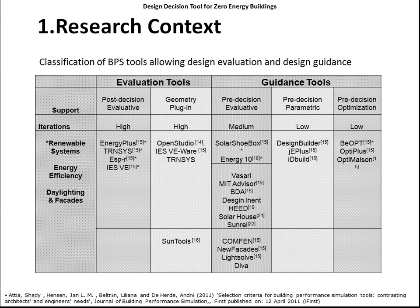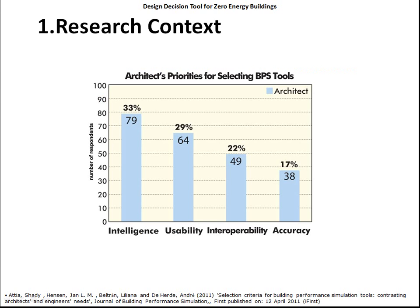The second criteria was: are the tool iterations high, medium, or low? I listed most tools and I found there are not bad some tools developed in the pre-decision evaluative range, medium. And what I am trying to locate or position, or niche my research, is that it becomes more in the low iteration. So it will be a pre-decision with low-iteration tool.